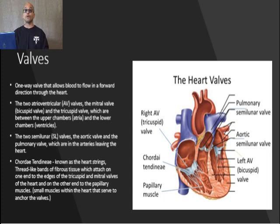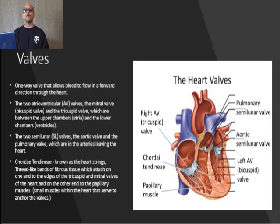You may be wondering what keeps these valves going in one direction. The atrioventricular valves are attached to thin strands of fibrous tissue called chordae tendinae, which are anchored in the papillary muscles of the ventricles. The semilunar valves do not have connectors and must rely on the pressure of the blood to keep the direction consistent.